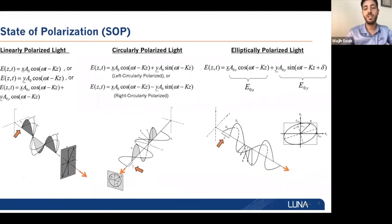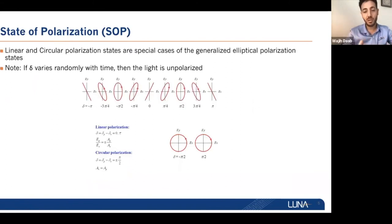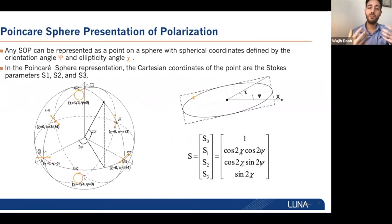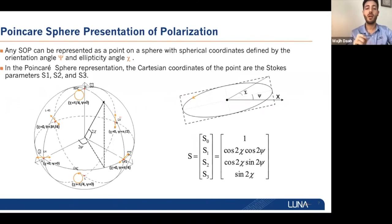There are linear and circular polarization states, and the main difference is related to the phase difference between the two components and the amplitude. When the phase difference between the two orthogonal waves is either zero or pi, you will end up with a linear polarization state. If the phase difference is plus or minus pi over two and the amplitudes are equal, you get a circular polarization state. To visualize and understand polarization, a Poincaré sphere representation is used — it's a 3D representation where any state of polarization can be represented as a point on this sphere.